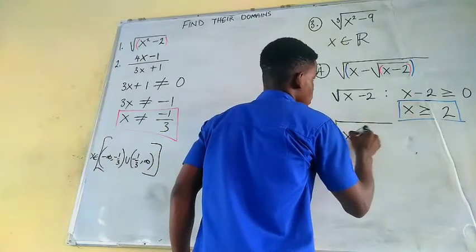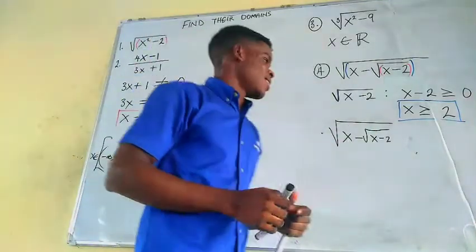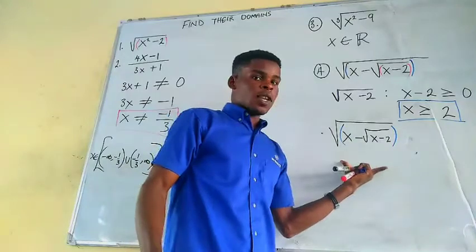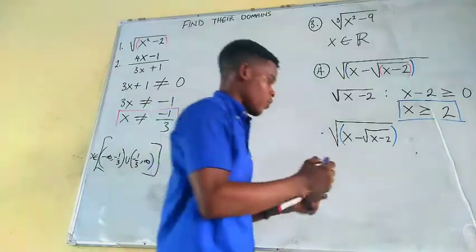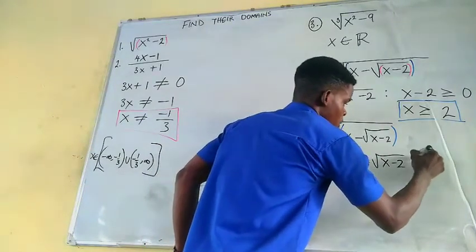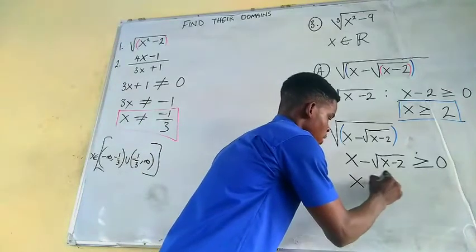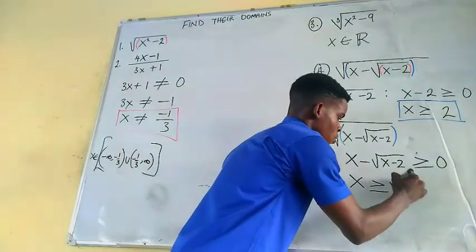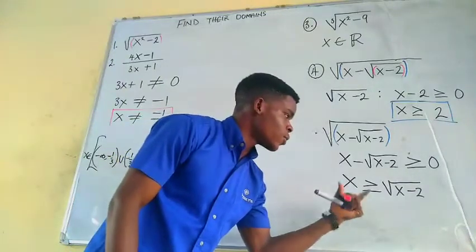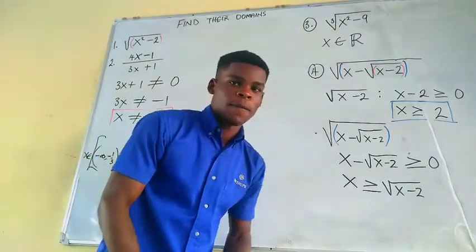Now for the outer square root — √(x − √(x−2)) — the entire radicand must be greater than or equal to zero. So we need x minus √(x−2) ≥ 0, which means x should be greater than or equal to √(x−2).